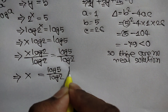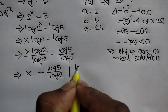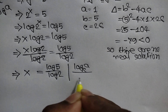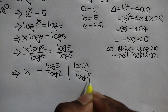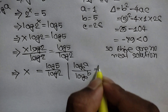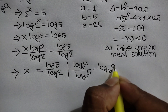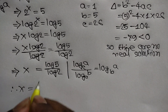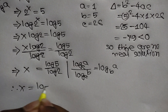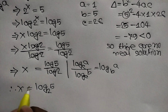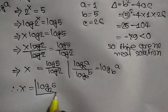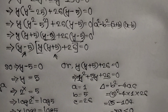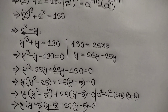Applying the change of base rule: log a base c over log b base c equals log a base b. Applying this rule, we get x equals log 5 base 2. This is the value of x. If you like this video, please subscribe to my channel. See you in the next video, bye bye.